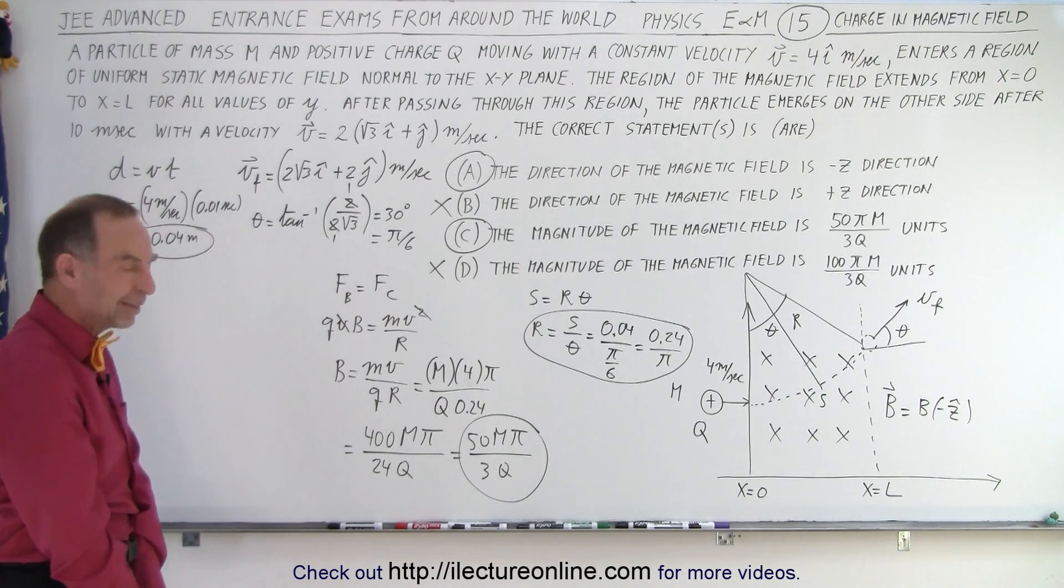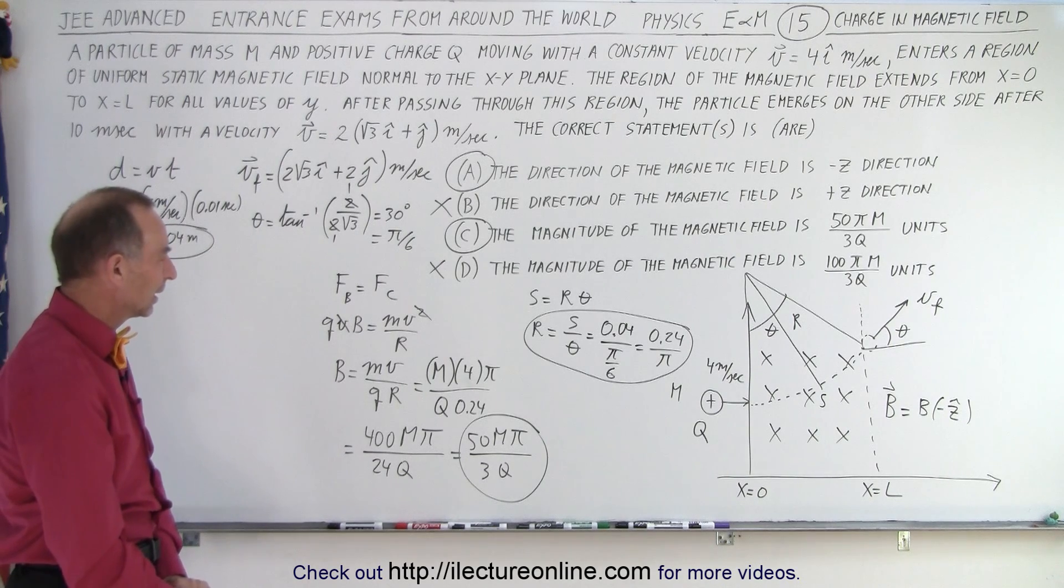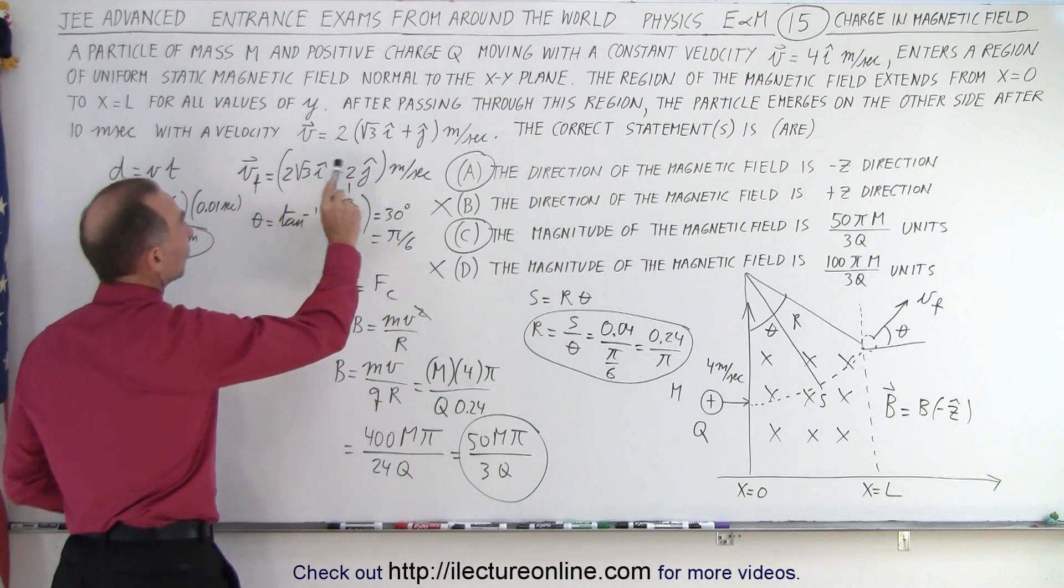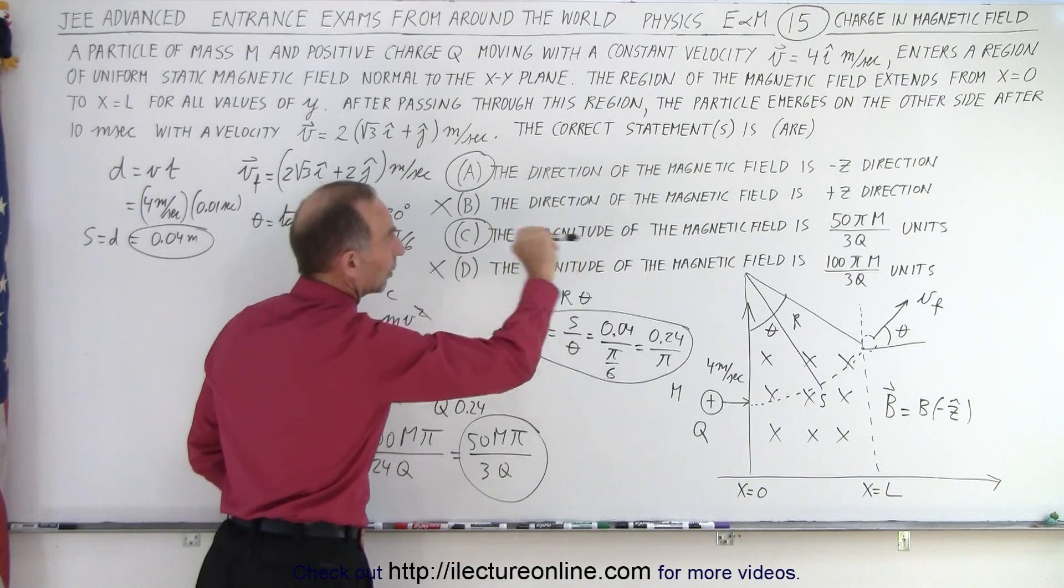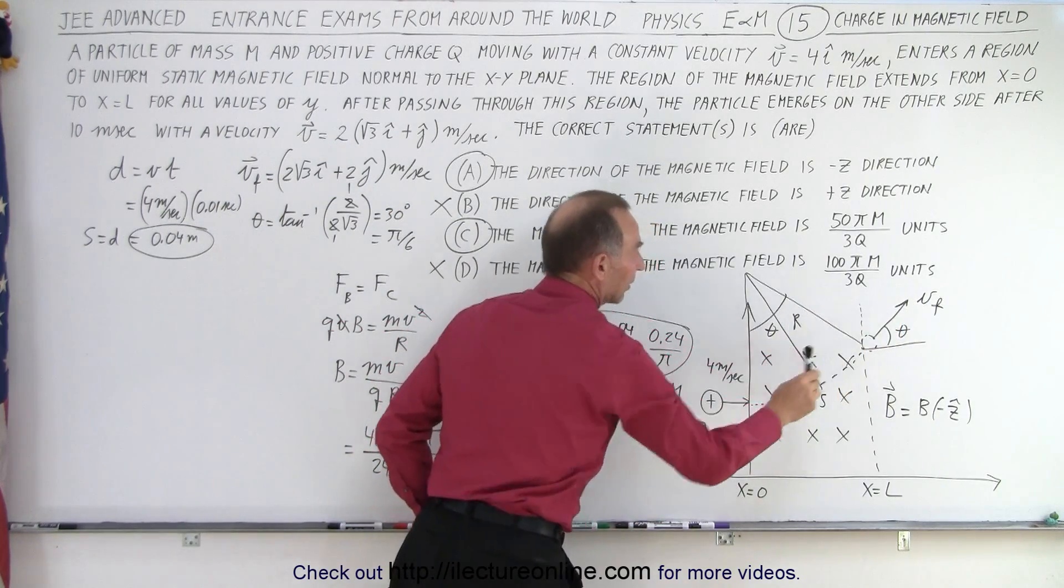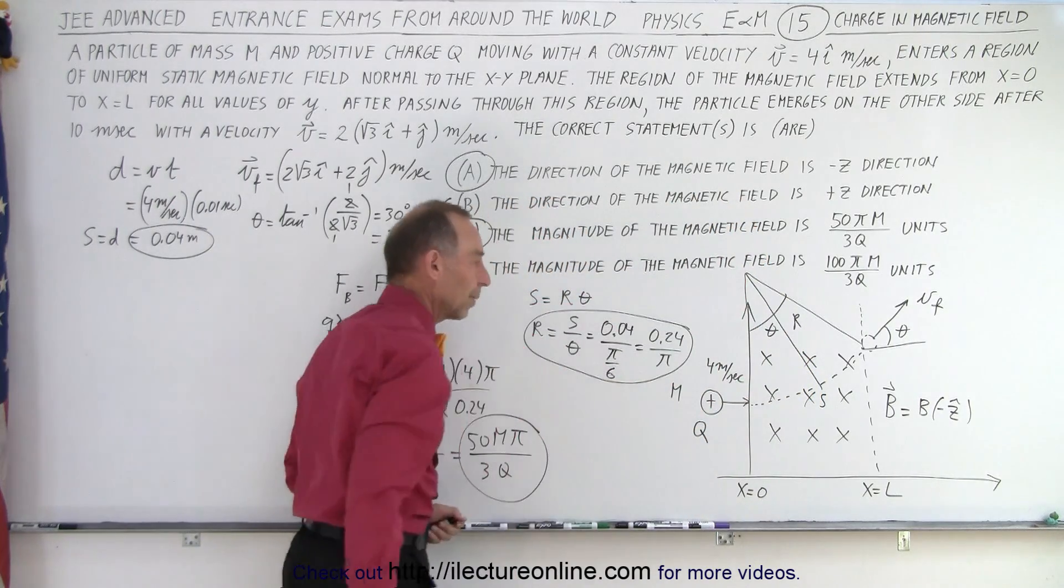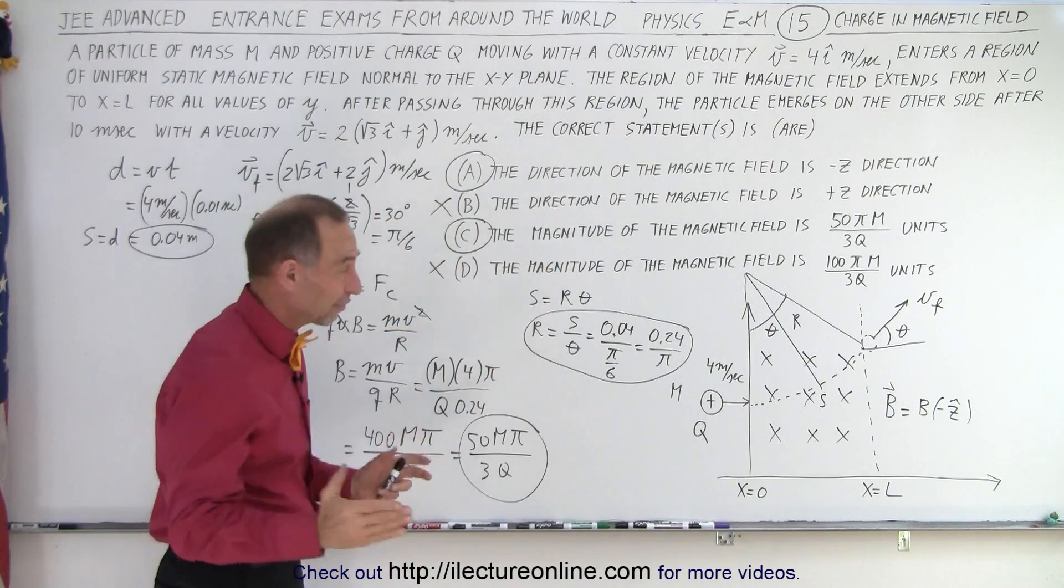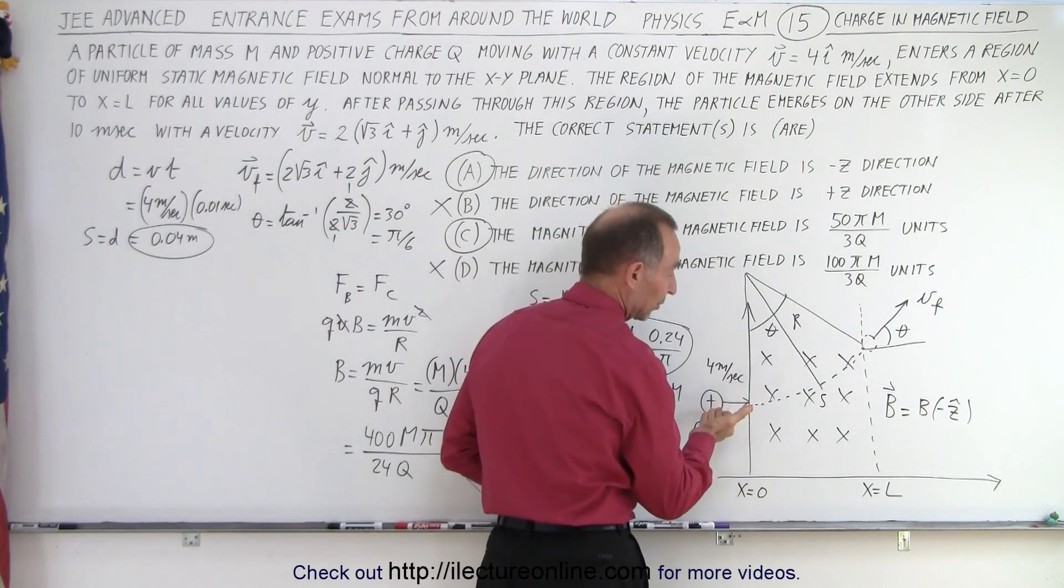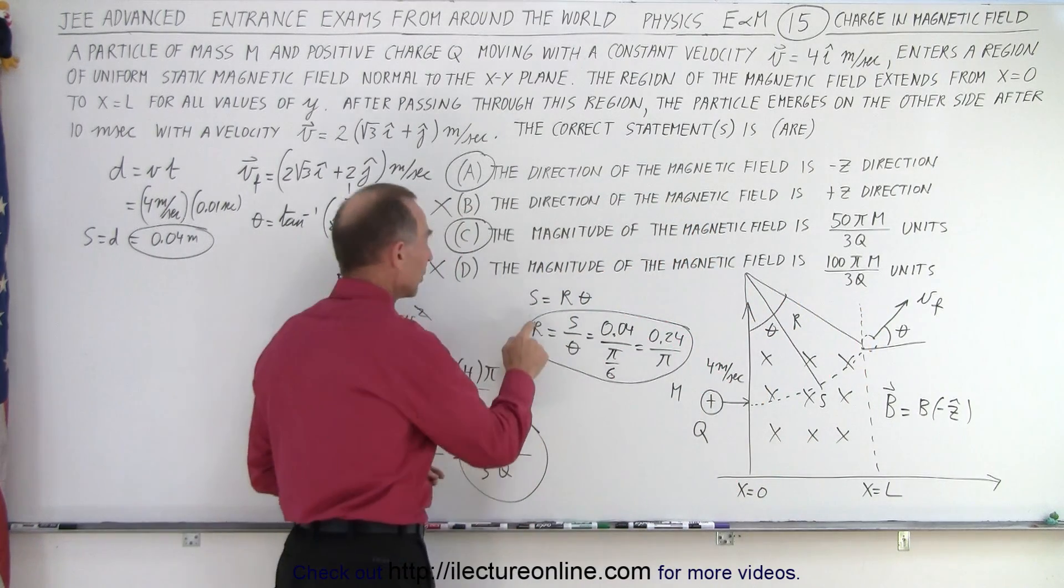We do have to know certain things. First of all we know that the entry point is the particle traveling horizontally. Then when it leaves it travels in this direction, that allows us to figure out that the magnetic field is into the board, so it gives us one of the two answers. Next we have to figure out that it travels for 10 milliseconds at a velocity of 4 meters per second, so we know the travel distance along the arc.